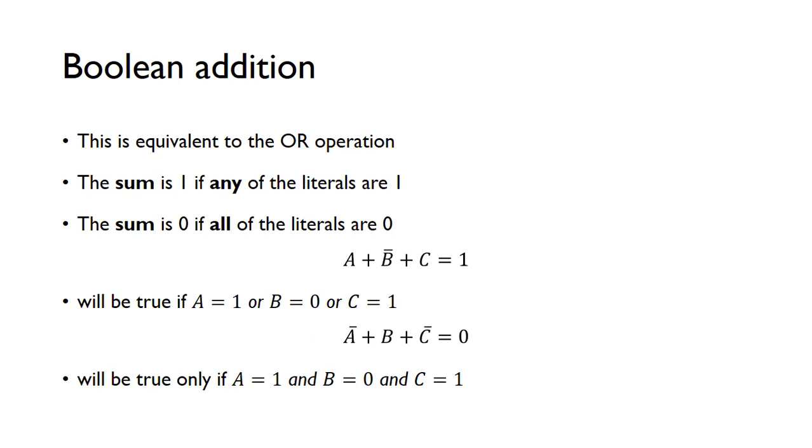Boolean addition is equivalent to the OR operation. We know from an OR gate that the sum is going to be 1 if any of the literals are 1. This comes straight from the OR gate truth table. If any input is a 1, the output will be a 1. In this case, the inputs are the literals and the output is the sum. So if any literals are 1, the sum is a 1.